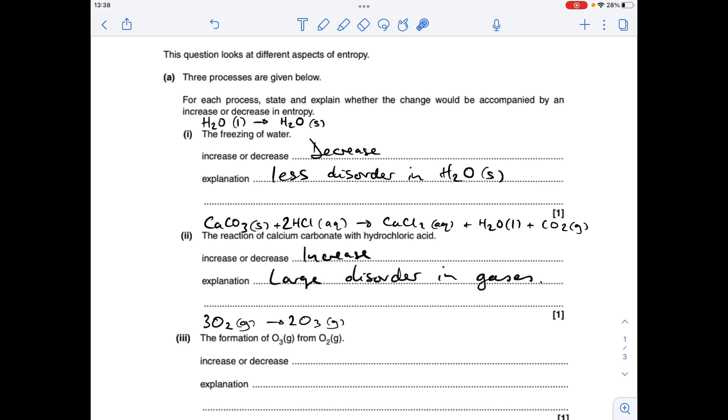And for the formation of ozone from oxygen, we've got this equation here. So you can see the moles of gas are going from 3 down to 2, so that's a decrease in entropy because you've got fewer moles of gas on the product side.